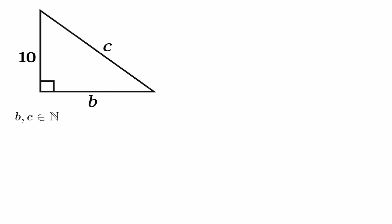So we need to find our b and c. You may be thinking there are infinite combinations, but here we are given a restriction: b and c have to be inside the natural numbers, so that means they have to be integers — whole numbers. No fractions, no decimals, nothing like that. They need to be whole numbers.